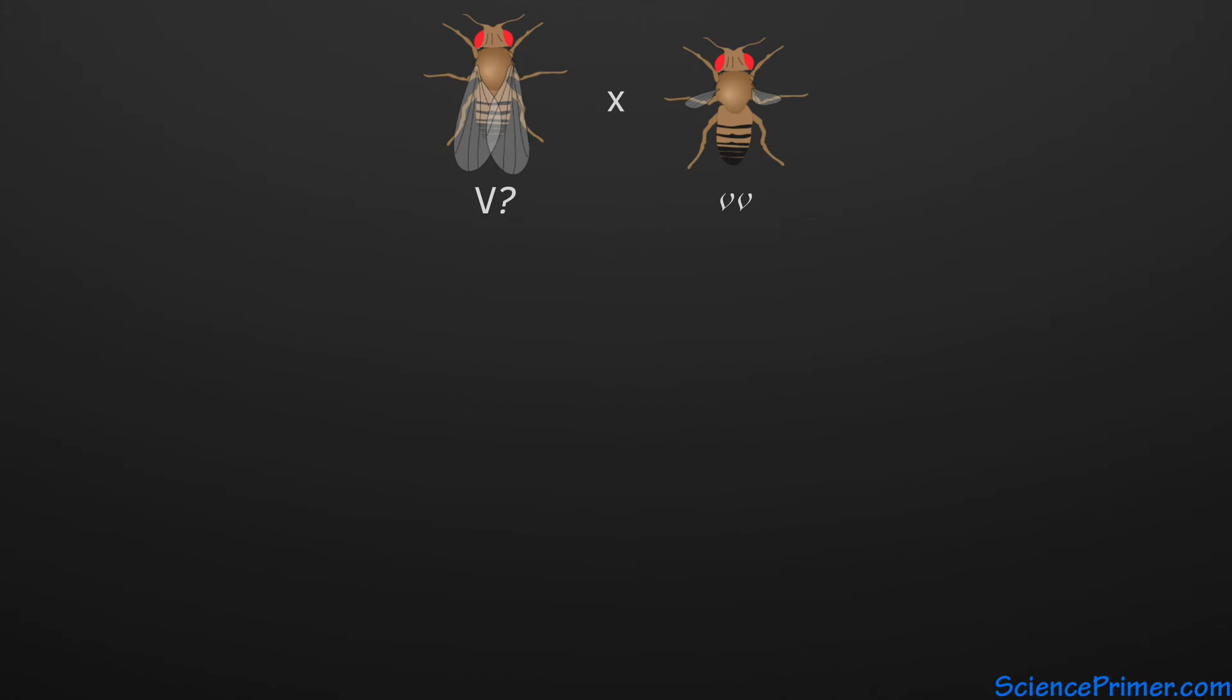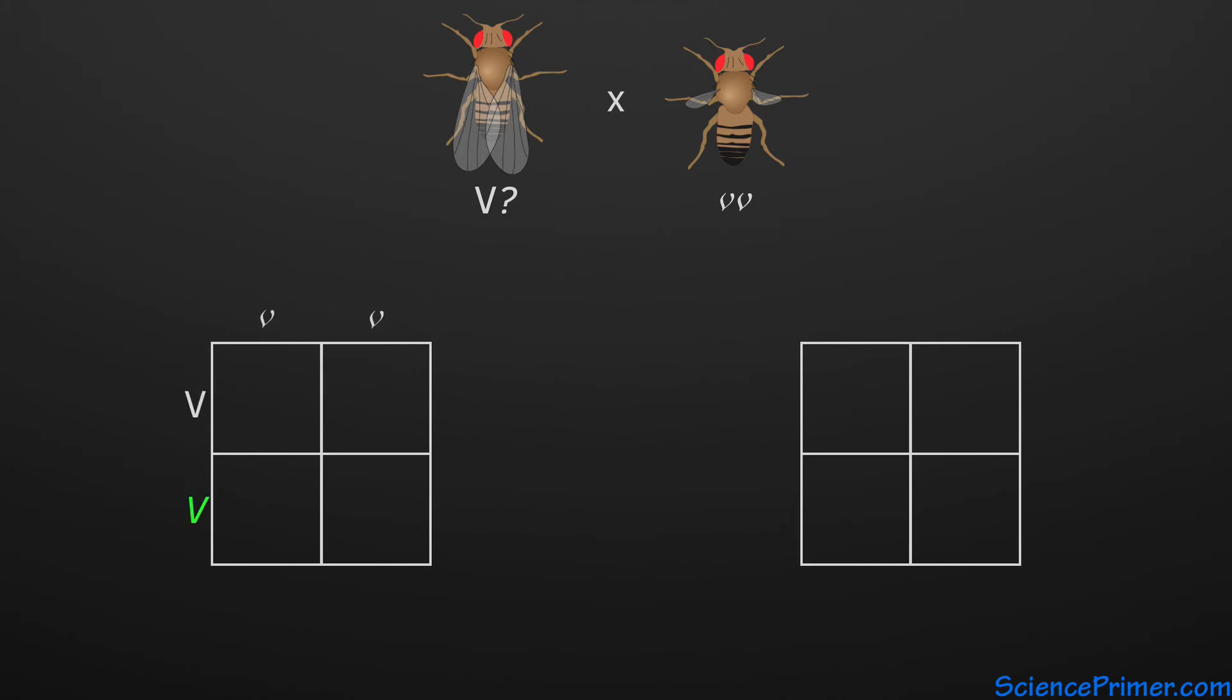Before actually performing the cross, Punnett squares can be used to predict the possible outcomes. There are two. If the wild-type parent is homozygous, it will give every offspring a wild-type allele, resulting in all of the offspring being heterozygous and exhibiting the wild-type phenotype.